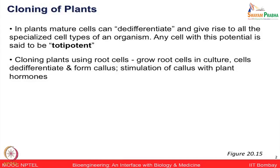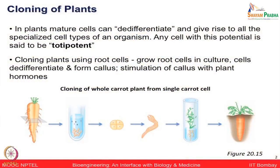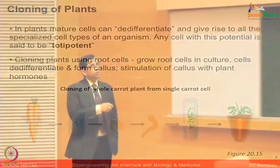Plant cells have much more ability to make totipotent cells, meaning the cells have the property where they can de-differentiate into any type of cell if you just provide them the right hormones and the right medium conditions. For example, if you take a small piece of carrot root and put it in a nutrient medium, the cells divide and a small embryo develops. If you then put it in a medium containing cytokinin and gibberellic acid, it can form root and shoot and result in a full carrot.